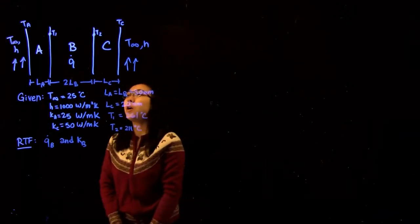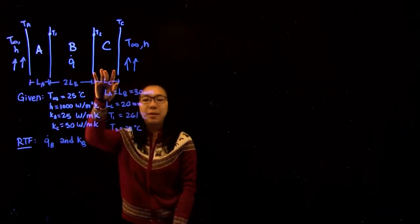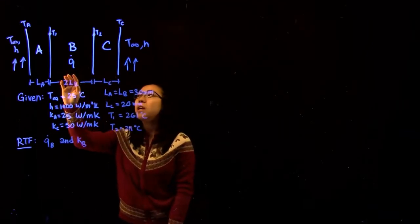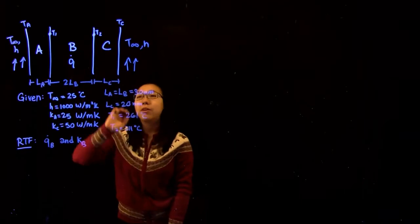In this question we have a planar wall with three regions A, B, and C. In region B we have heat generation and there's no generation in A or C.